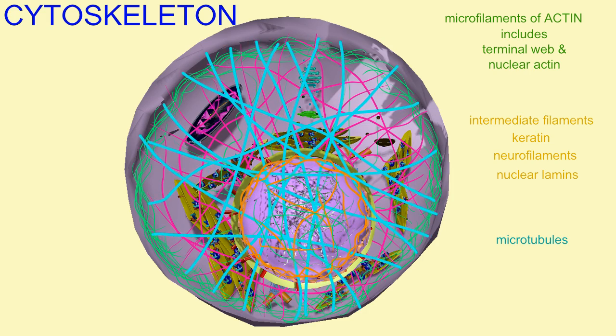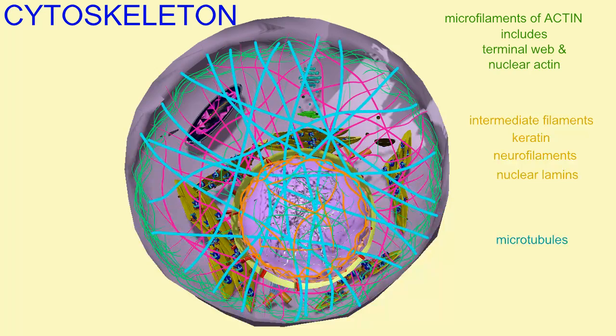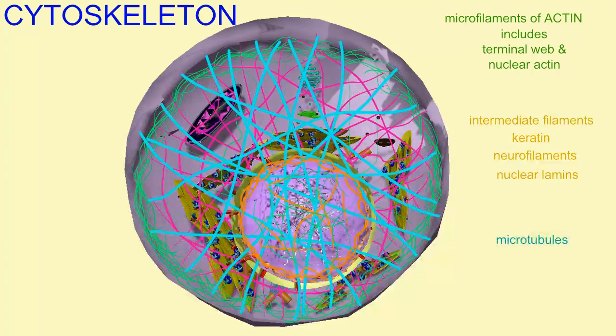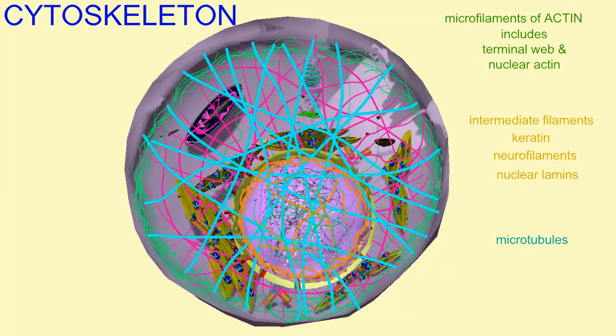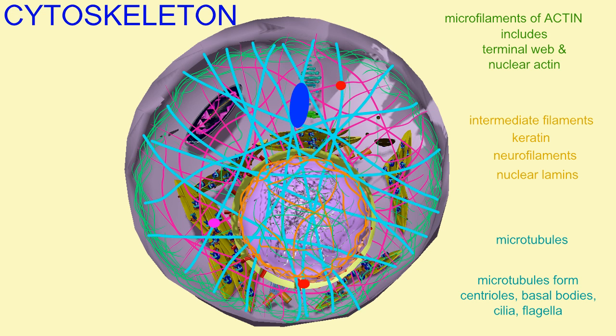The largest components of the cytoskeleton are the hollow tubes composed of tubulin, known as microtubules. These help determine a cell's shape, help to position cell organelles, and organelles can be transported throughout the cell by traveling along microtubules.